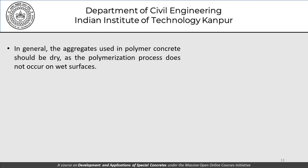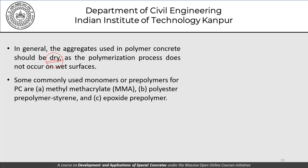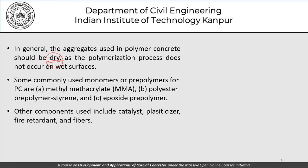In general, aggregates used in polymer concrete should be dry, as the polymerization process does not occur on wet surfaces. Some commonly used monomers or pre-polymers are methyl methacrylate (MMA), polyester pre-polymer, styrene, or epoxide pre-polymer. Other components include catalysts, plasticizers, fire retardants, and fibers. These can be added to the polymer-aggregate matrix to achieve desired properties such as fire retardation or improved toughness.